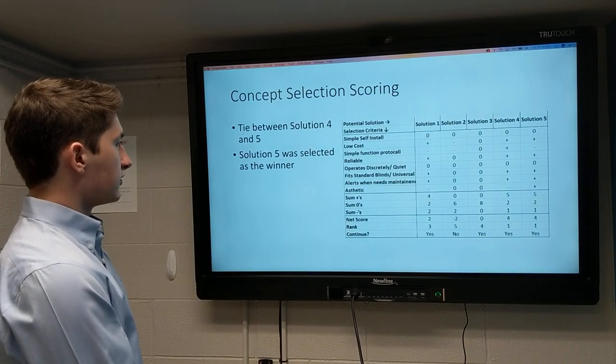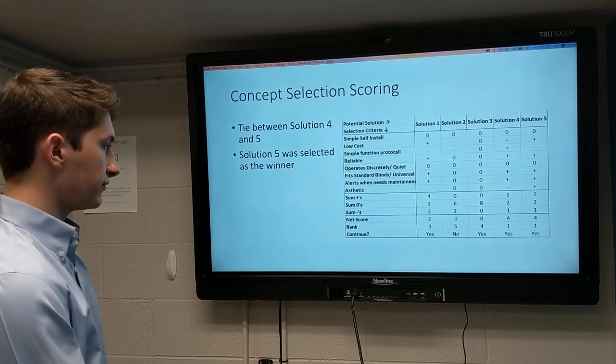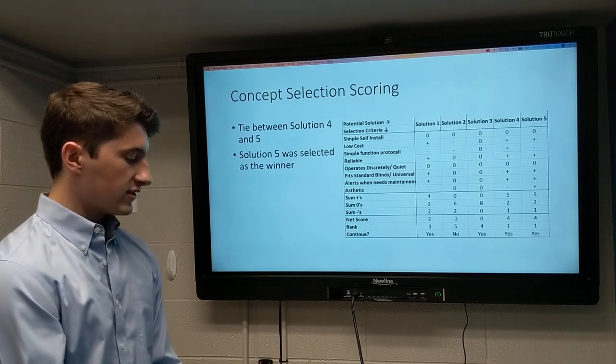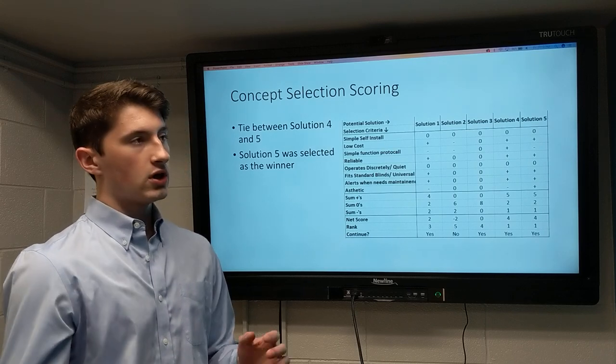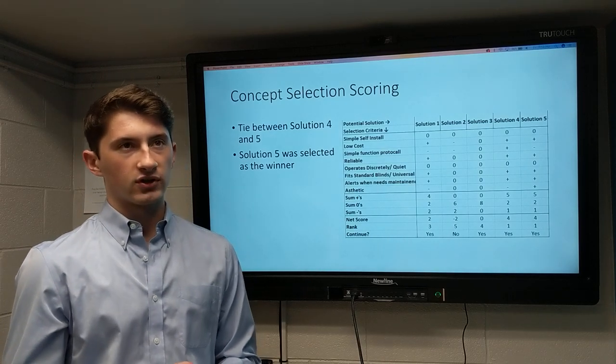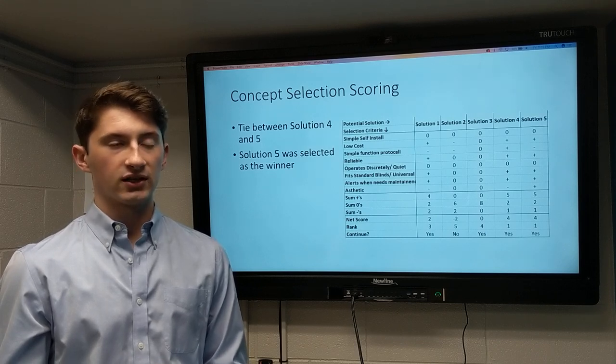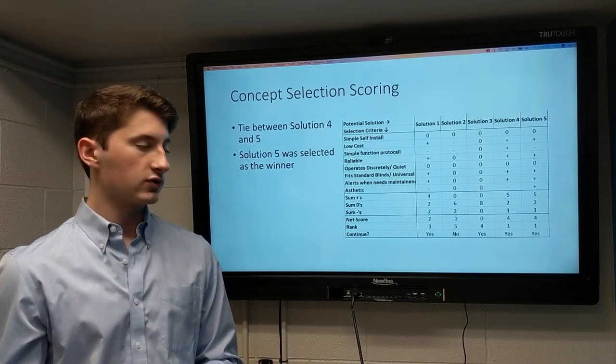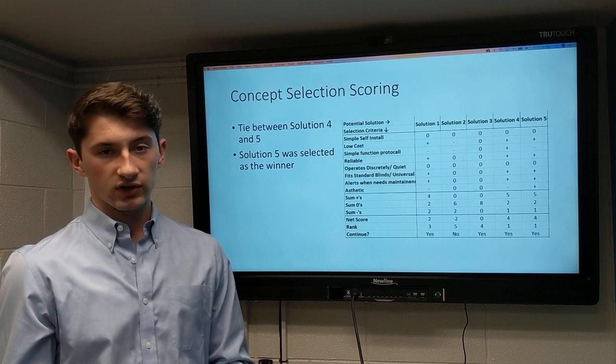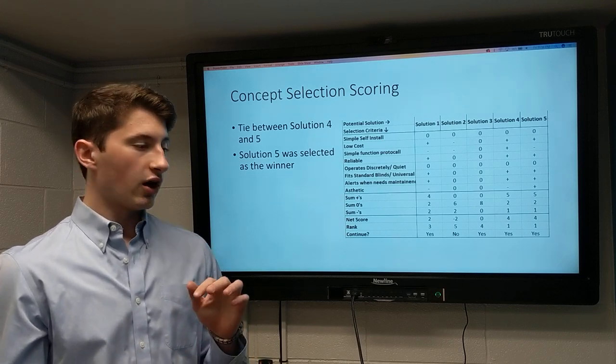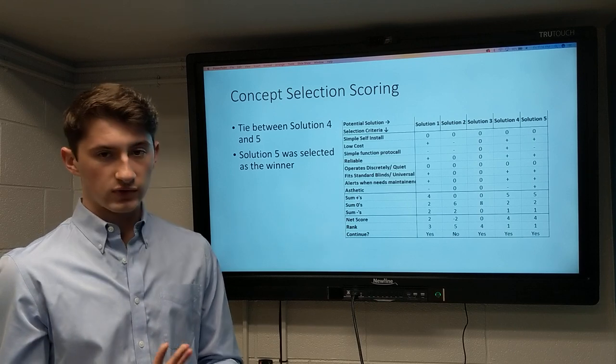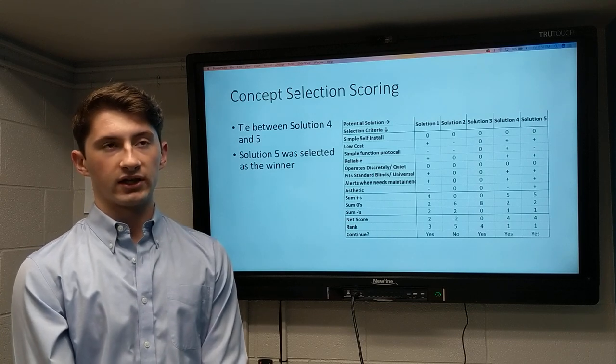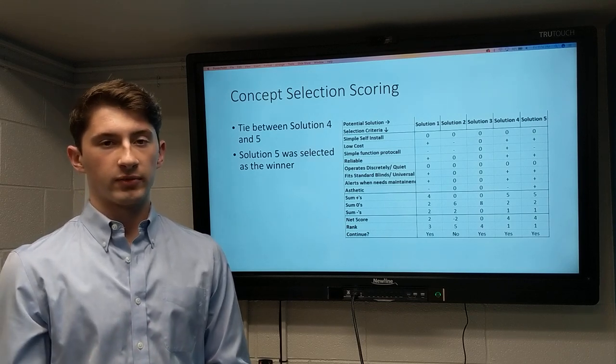For concept selection scoring, we had a tie between solution 4 and 5. Of these two solutions, we decided to go with solution 5. This is mainly because solution 5 was the solution we kind of had envisioned since the beginning. It had the exact functions that we thought we would be needing to use. It uses a computer, it uses a servo motor, which was required for the project, and it uses a battery to power that servo motor. This was what we really wanted from the beginning, and after our grading, it turned out that was the best solution.